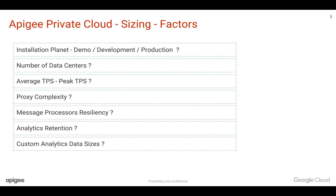The next factor is Custom Analytics Data Sizes. By default, Apigee does not capture any request or response into Apigee Analytics. But as a business, if you would like to capture that data and tie it with the meta-info to get end-to-end visibility, you can do that. You need to decide how many metrics and dimensions from custom request and response you would like to capture into Apigee Analytics.